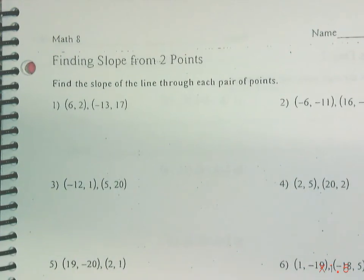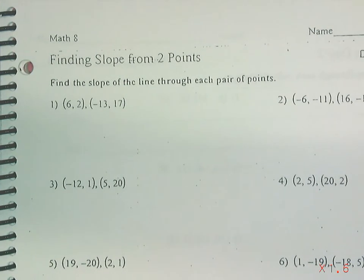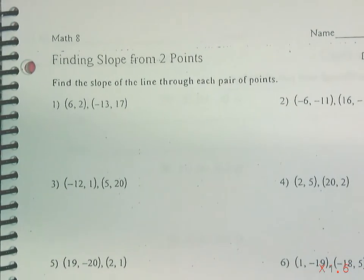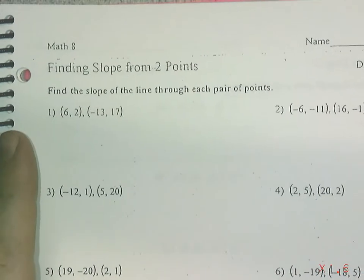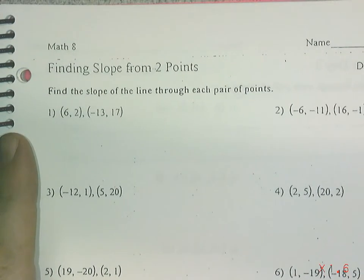Today we're going to be talking about finding slope given two points. There are a couple of ways to do this and I'm going to show you both. One is a little more complicated and requires better memory, and then there's a simpler way. I'm going to show you the more complicated way first — finding slope from two points using a formula.